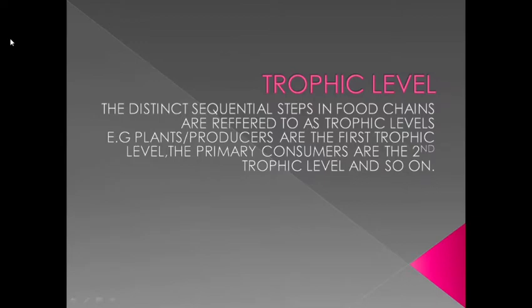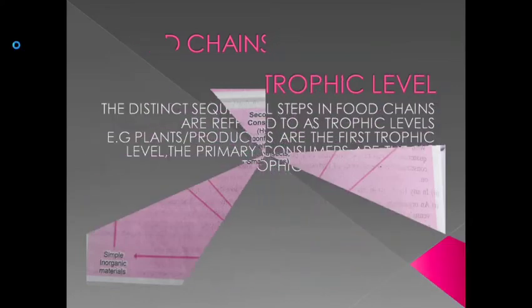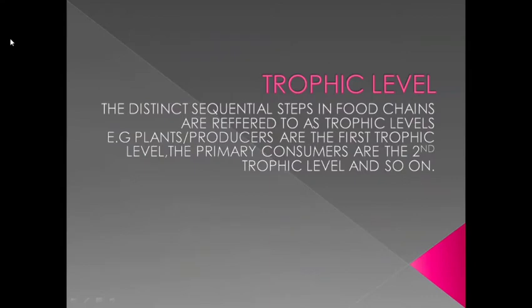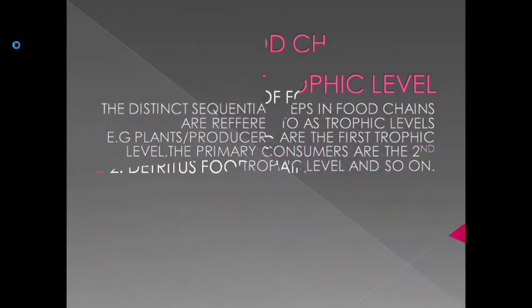So here we have a thing called a trophic level. The first step is for producers, the second step is primary consumers, the third step is secondary consumers, the fourth step is tertiary consumers, and the fifth step is quaternary consumers. Each distinct sequential step in a food chain is called a trophic level. Plants are the first trophic level, primary consumers are the second trophic level, secondary consumers are the third trophic level, tertiary consumers are the fourth trophic level, and quaternary consumers are the fifth trophic level.